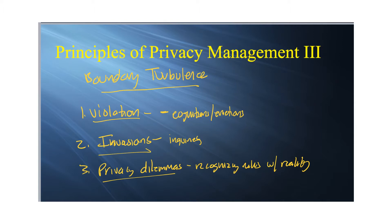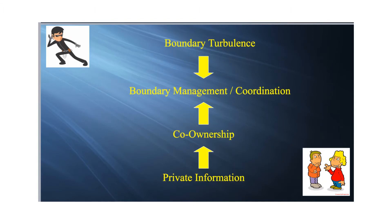The idea is that boundary turbulence is not a good place to be. So if you're in a relationship and somebody tells you a secret, don't break the privacy rules — it's not fun for you or your partner. The goal is to have private information, establish co-ownership, and have those co-owners manage the boundary so that only authorized people know, without sharing too much or telling the wrong people.